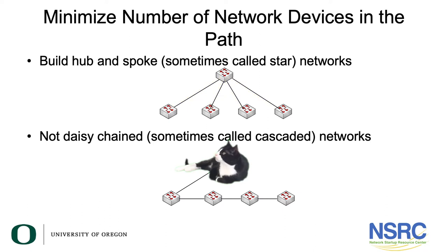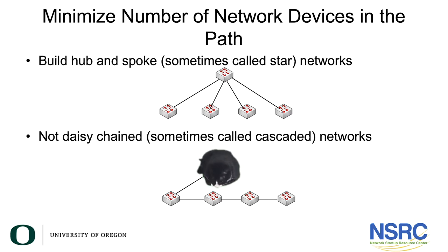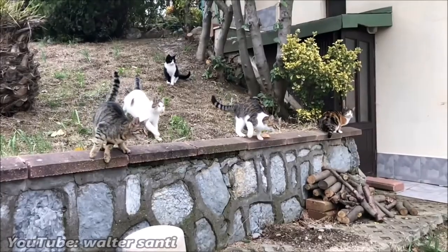We do not want you to build daisy chain networks, sometimes called cascaded networks, where you connect one device, then another, and then a third simply to the second. We see this in campus networks where one building has an internet connection and the adjacent building says, 'Hey, I hear you have some internet — can I get some?'